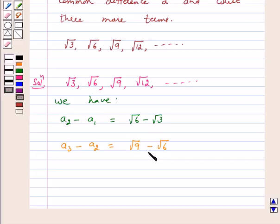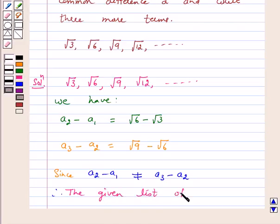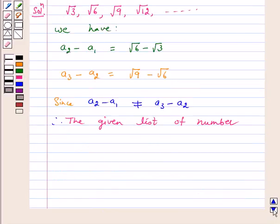Since A2 minus A1 is not equal to A3 minus A2, the given list of numbers does not form an AP.